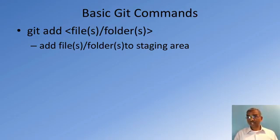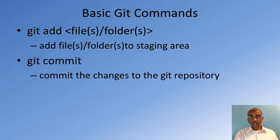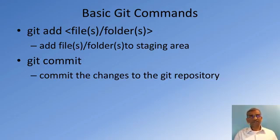Once you add files to the staging area, you can commit that snapshot of our folder status to our git repository. When you do the git commit, it will commit the current state of our folders — all files as they exist at that moment, once they have been staged using git add — into our git repository.